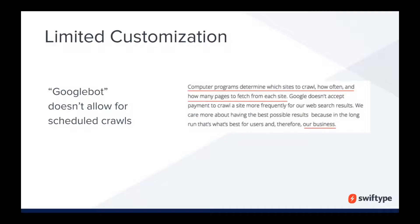So now not only are you frustrating visitors because they can't find what they're looking for, but you've completely removed them from your site as well. Another piece of the limited customization we see is Google's crawler. The Googlebot doesn't allow you to schedule crawls on your own site. They actually say it right there: 'We care more about having the best possible results because in the long run, that's what's best for users and therefore our business' — not your business, but Google's business. This is especially damaging for websites that put out time-sensitive content, like a news site or a university that's just released new school year information. You really should have that level of control, and you shouldn't let Google decide which content is best for your business.